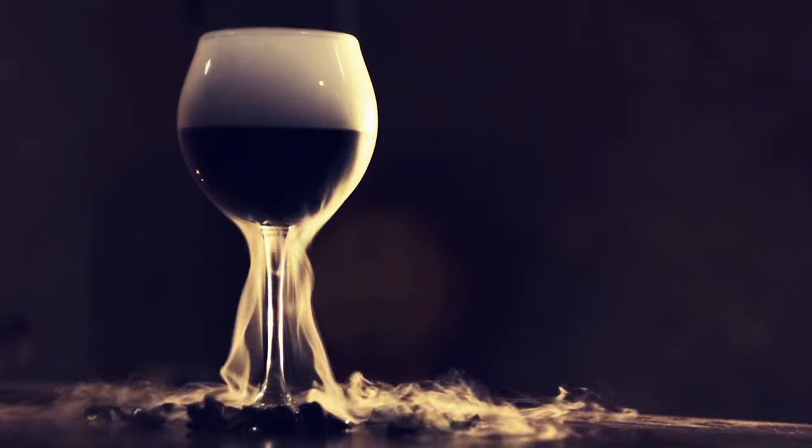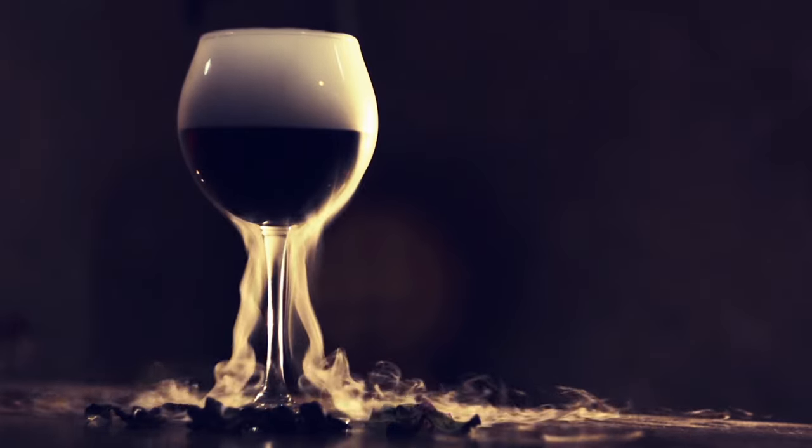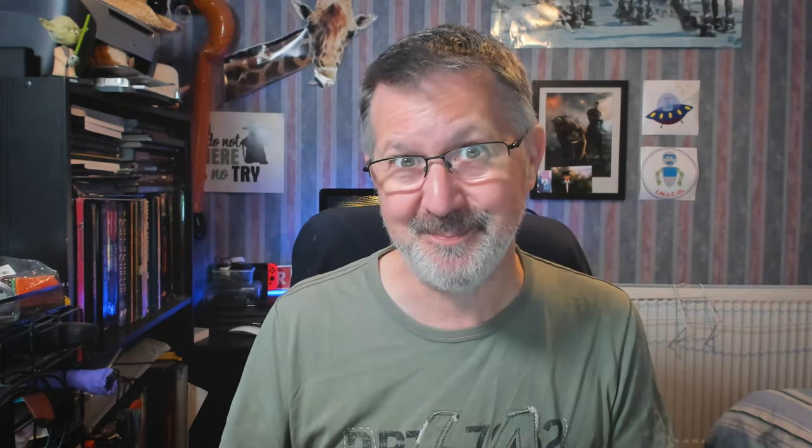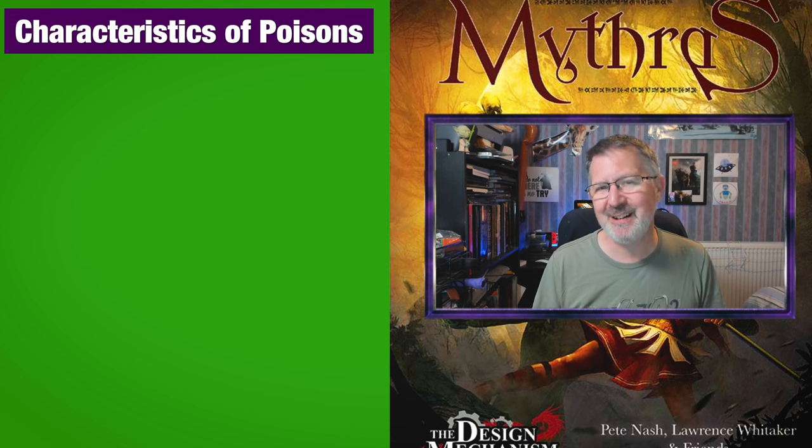You're here for the Mythras rules video all about poison, so let's get on with it. Poisons and diseases actually operate in the same way, so for the rest of the video I'm going to refer to them as poisons rather than saying poisons and diseases every time. The rulebook talks about various characteristics or elements of poisons.